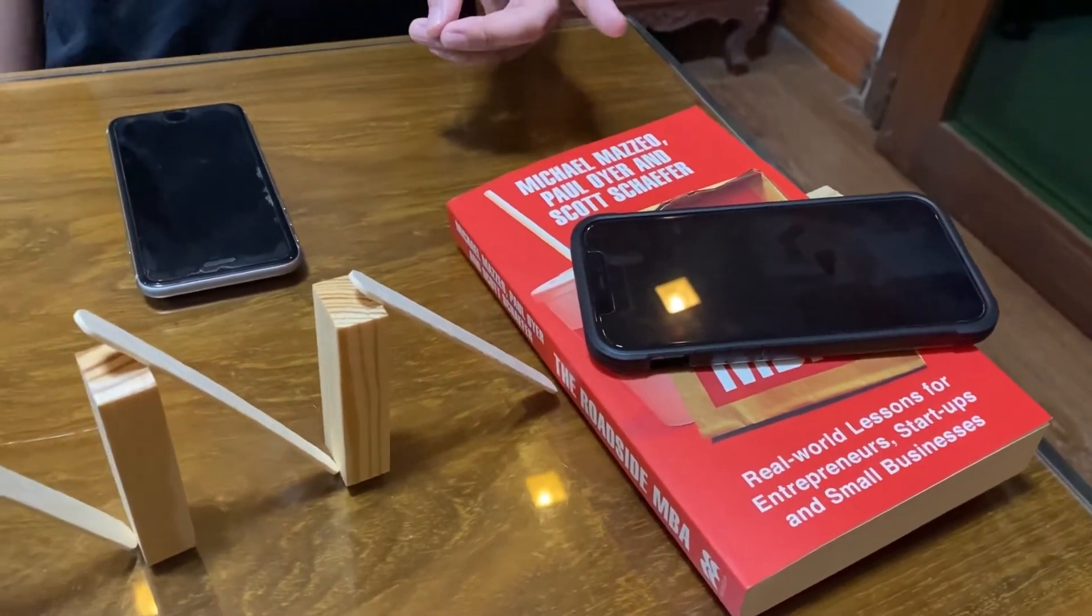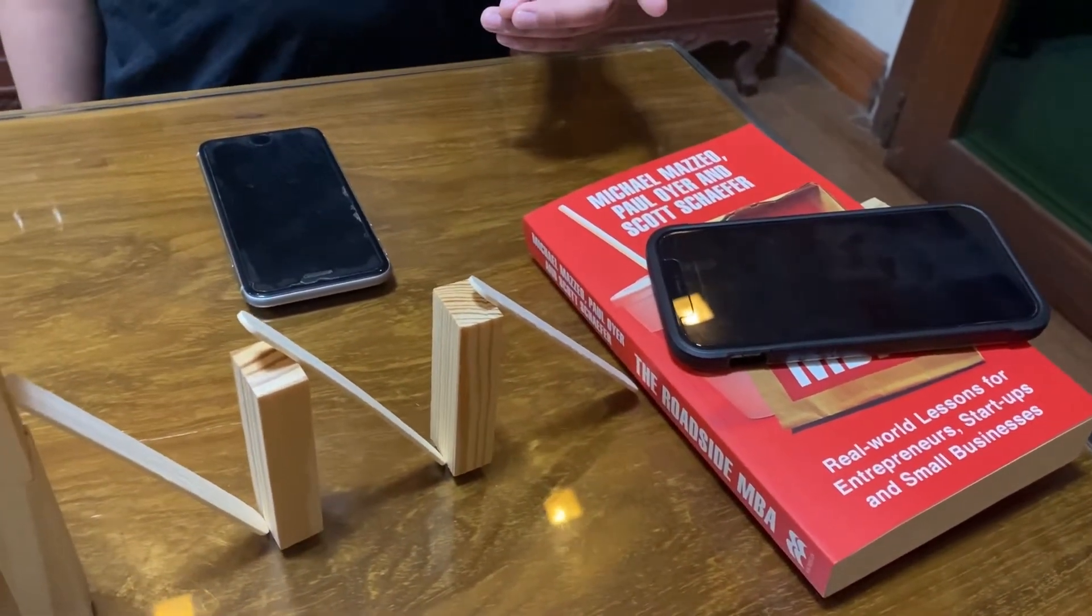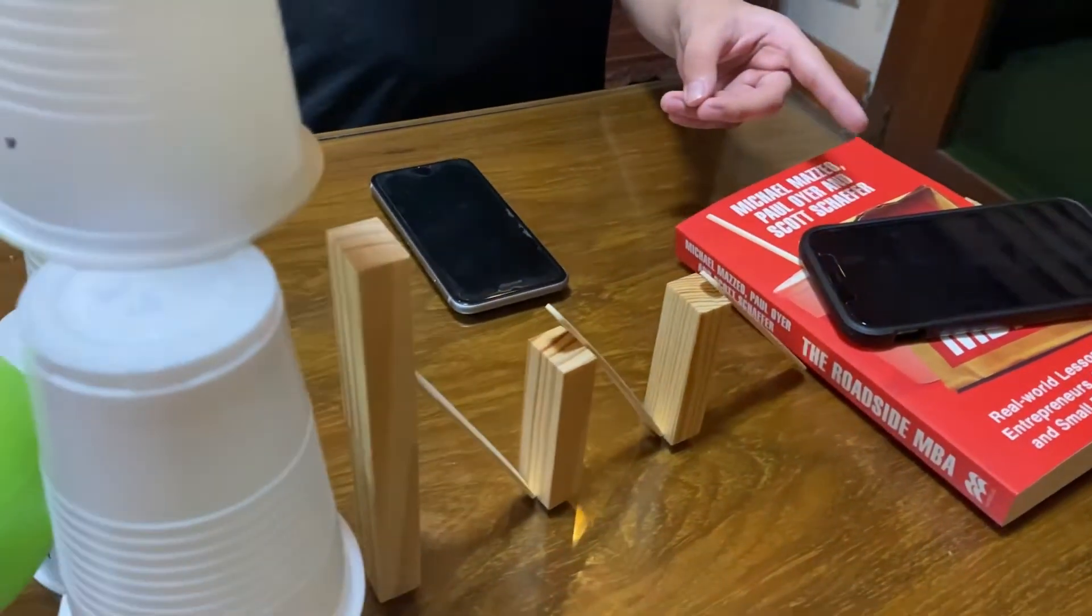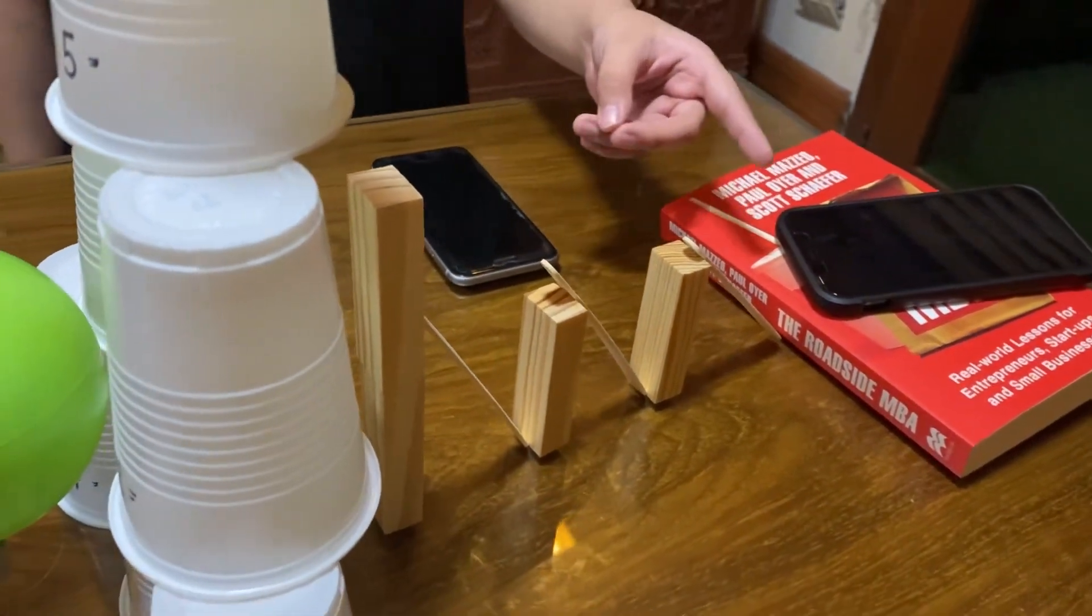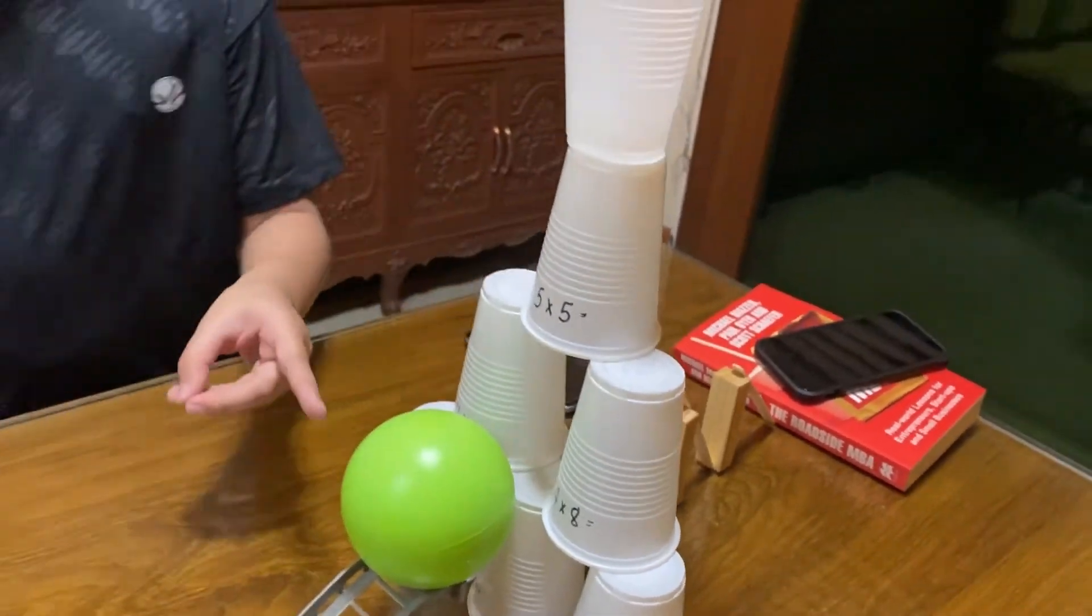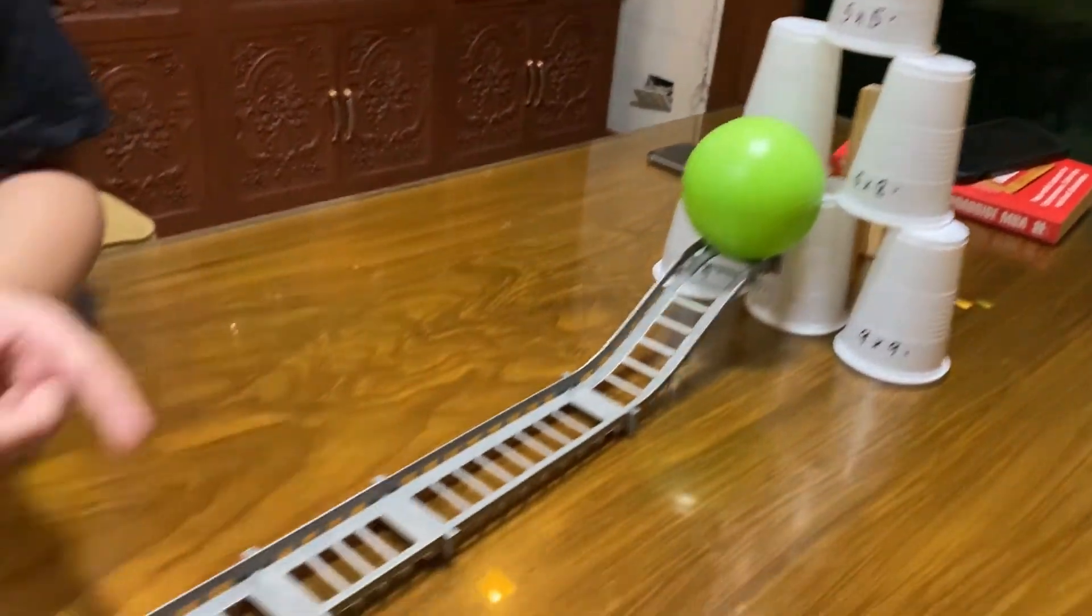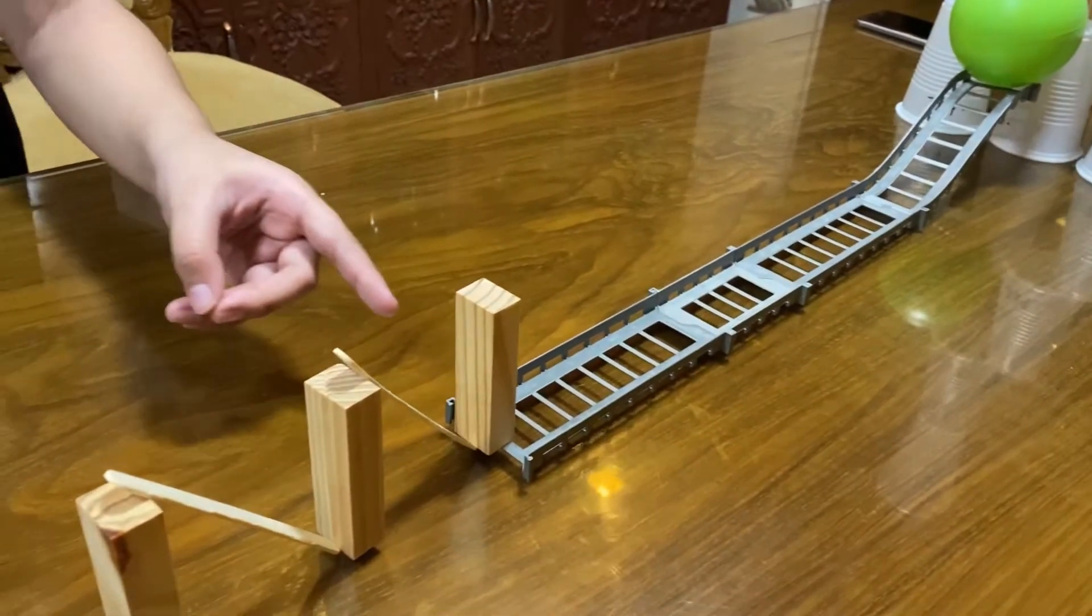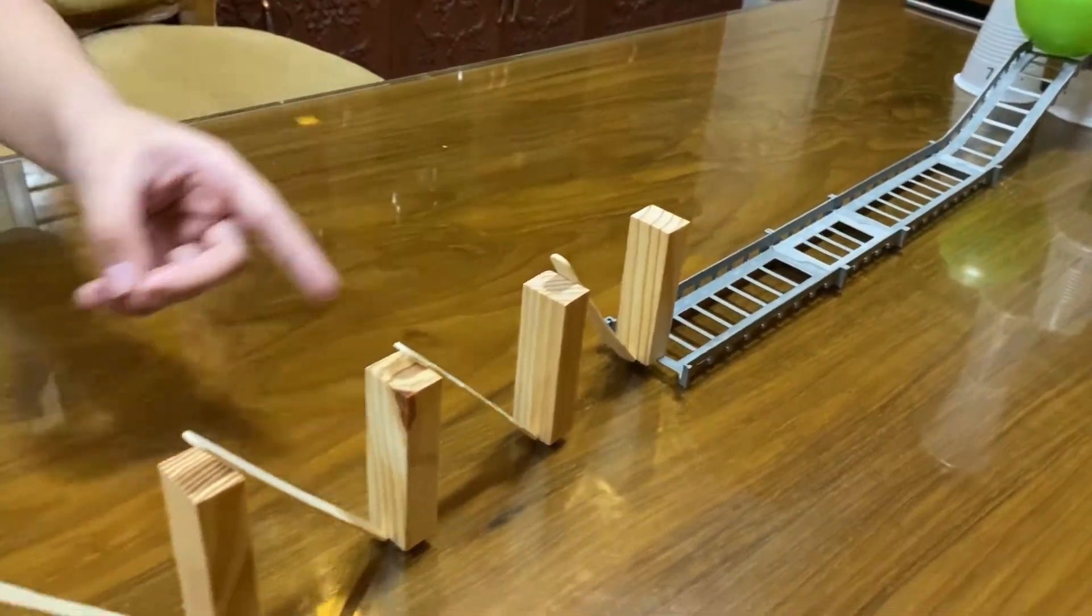I have here my dad's phone. I'll call my dad's phone and vibrate it and it will slowly slide down and push the popsicle sticks to the Jenga pieces, hit the popsicle sticks, hit the green ball down the racetrack and hit the Jenga pieces with popsicle sticks.